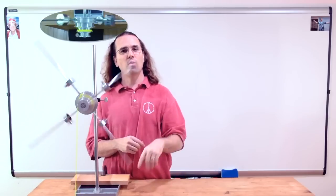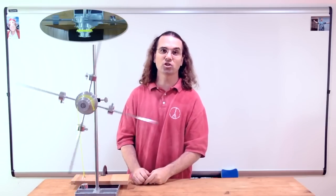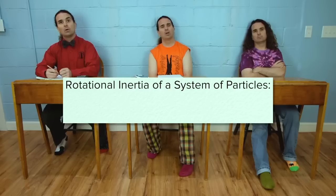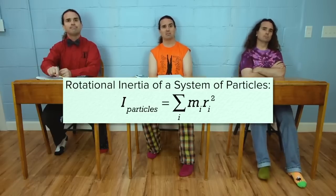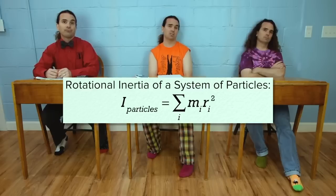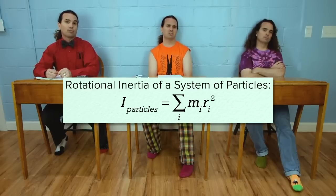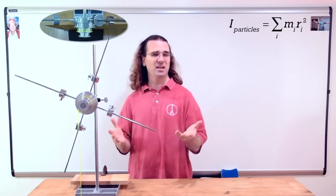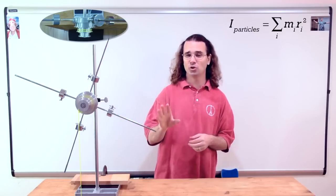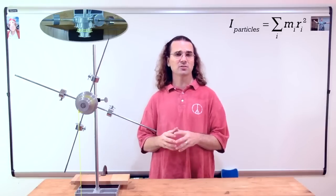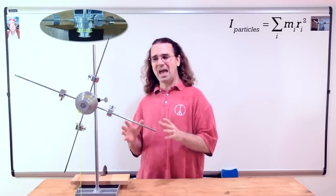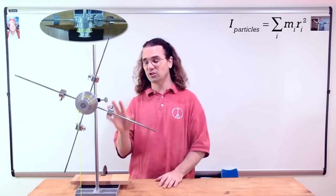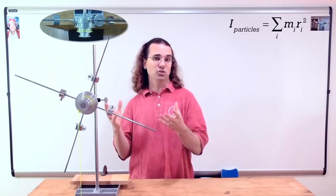What is the equation for the rotational inertia of a system of particles? The moment of inertia, or rotational inertia, of a system of particles equals the sum of the quantity of the mass of each particle times the square of the distance each particle is from the axis of rotation. But that thing is not a system of particles. The basic idea is that we can use the equation you just gave us for the rotational inertia of a system of particles to understand what happens to the rotational inertia of the demonstrator when we make changes to it.